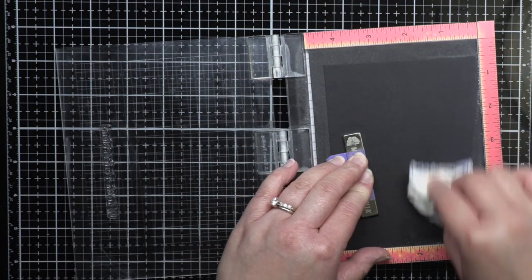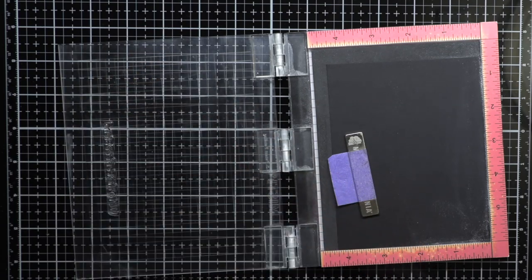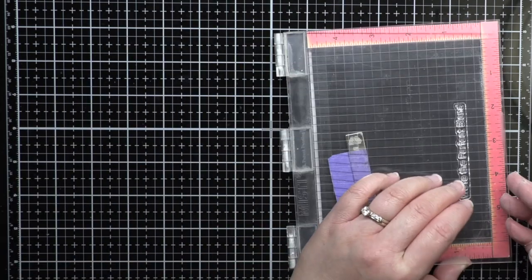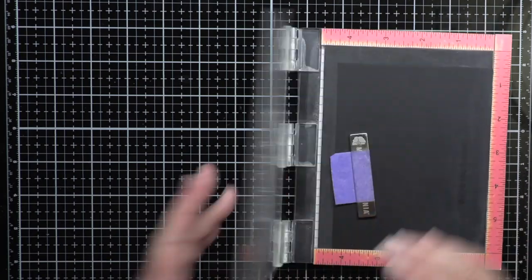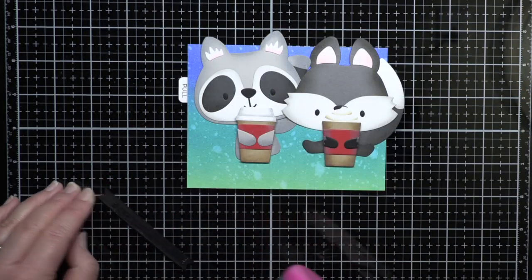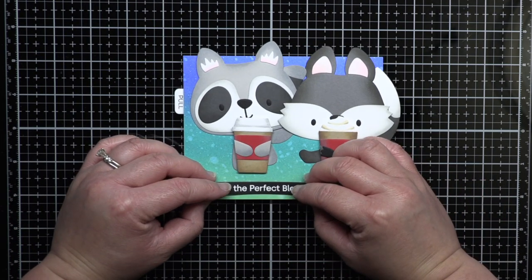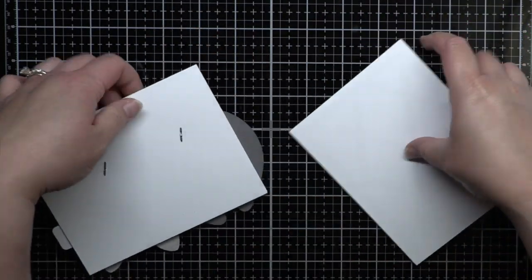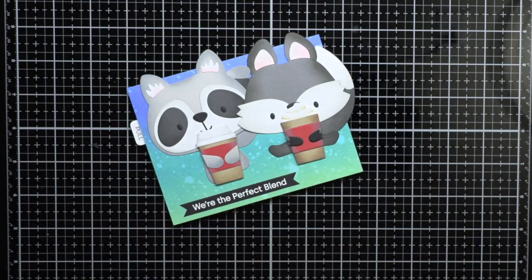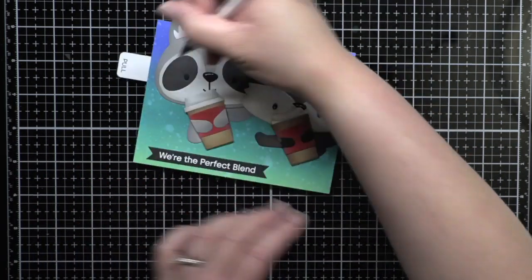Next, I stamped a sentiment from Cup of Love onto licorice cardstock and heat embossed it with white embossing powder before trimming it down to a thin fishtail banner. I adhered it to the card and then adhered the card panel to a top folding card base. I added a few accents with a white gel pen, and then finished the card with a layer of crystal glaze and a little chunky glitter on the whipped cream.